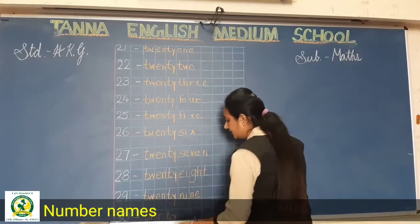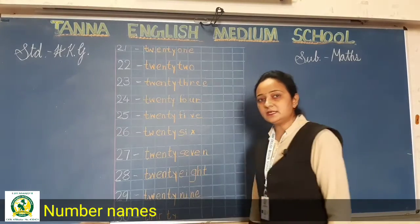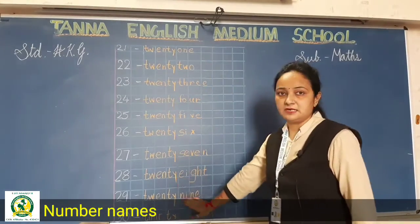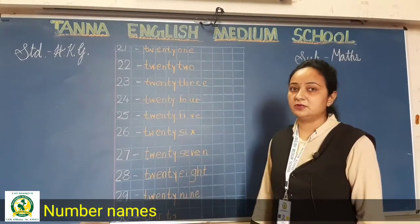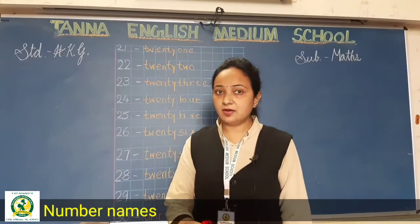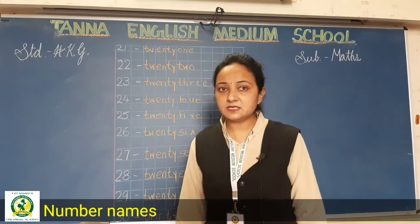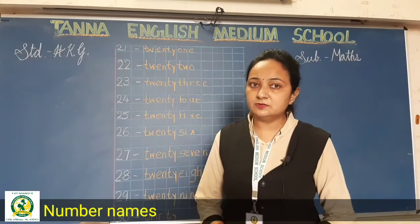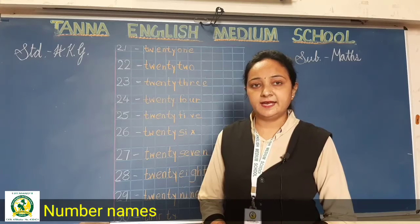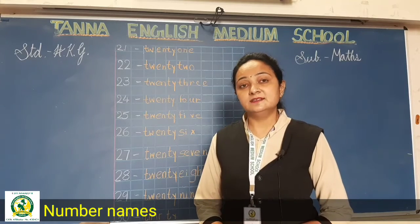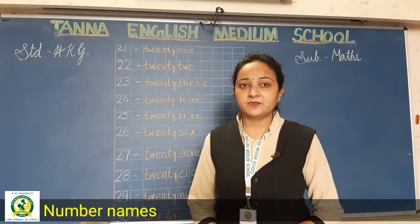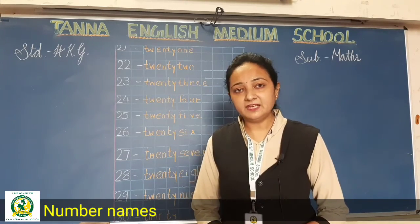So here we have done the number names from 21 to 30, which you have to complete in your CW book and HW book. Please thoroughly learn it. Thank you.